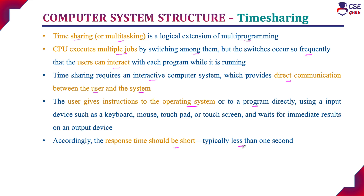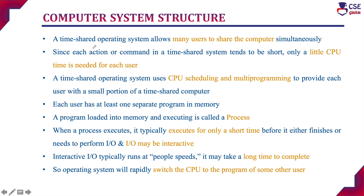The main difference between multi-programming and time-sharing is that in multi-programming, user interaction is nil, whereas in time-sharing, the user can interact with the operating system or program directly. In time-sharing, the operating system allows many users to share the computer simultaneously. Since each action or command tends to be very short — the switch between processes happens very fast — only a little CPU time is needed for each user. The time-sharing OS uses CPU scheduling and multi-programming to provide each user with a small portion of the computer's time.